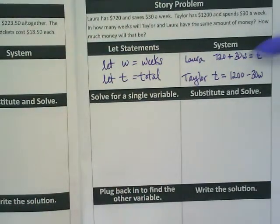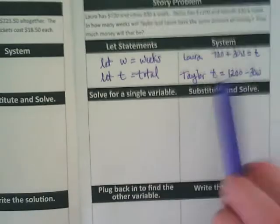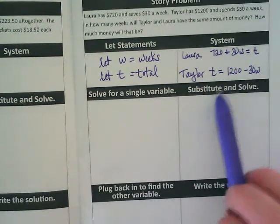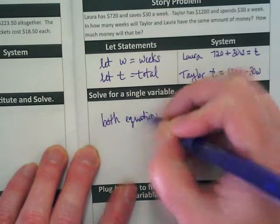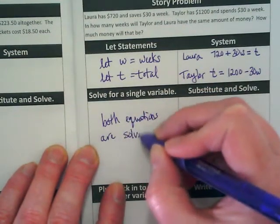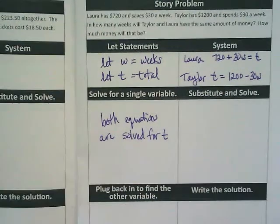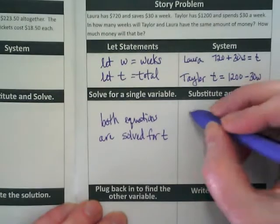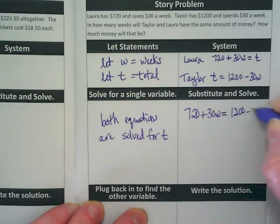Because this is plus $30w and this is minus $30w, I could set this up as elimination. But I think word problems are much easier to solve as substitution. Both Laura's equation and Taylor's equation are written to equal T, so they're both already isolated. When you have two equations where you're trying to find when they equal the same thing, you just make them equal to each other: $720 plus $30w equals $1,200 minus $30w.